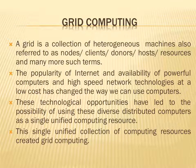A grid is a collection of heterogeneous machines, also referred to as nodes, clients, donors, hosts, resources and many more such terms. It is actually a single unified collection of computing resources. The popularity of the internet and the availability of powerful computers and high-speed network technologies at a low cost has changed the way we can use computers. These technological opportunities have led to the possibility of using diverse distributed computers as a single unified computing resource. So a grid is a collection of computing resources, and the specialty of a grid is that it consists of heterogeneous machines or nodes.